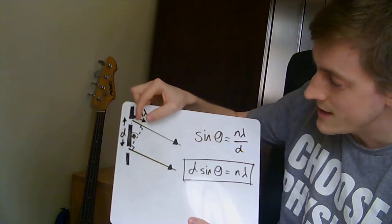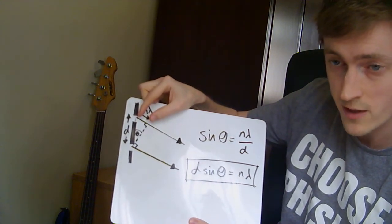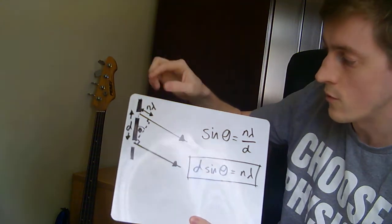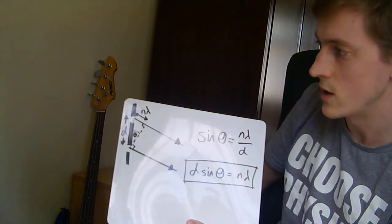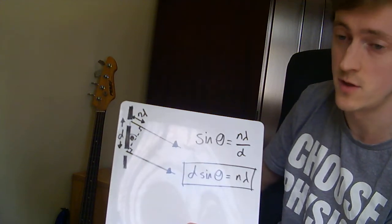So we need this distance here, this extra distance, to be equal to a whole number of wavelengths of the particular wave that it's going through. Otherwise, you're not going to get an order. That's just something for you to remember.